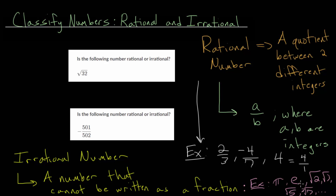There are many examples of irrational numbers. For these practice problems, we just need to determine if a number is rational or irrational. The one on the bottom you can determine right away is a rational number, because it is written as a fraction. If you can write the number as a fraction or as a whole number, then you know it's rational, since that is effectively the definition of a rational number.